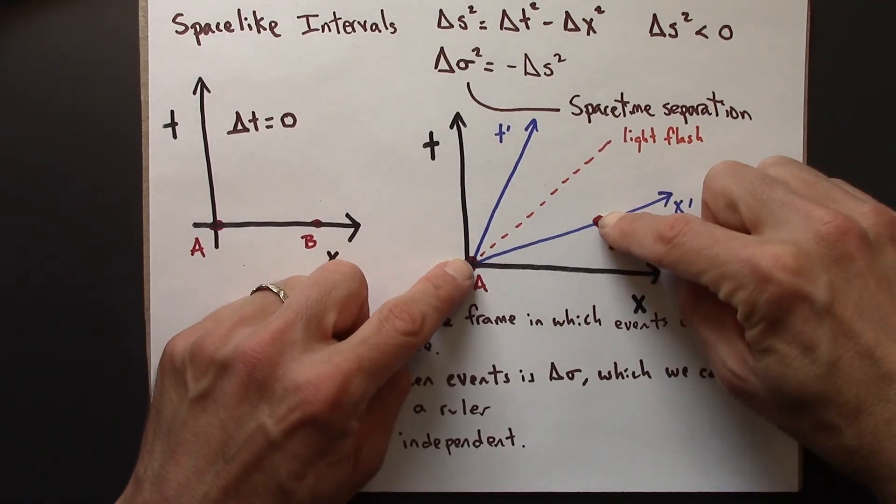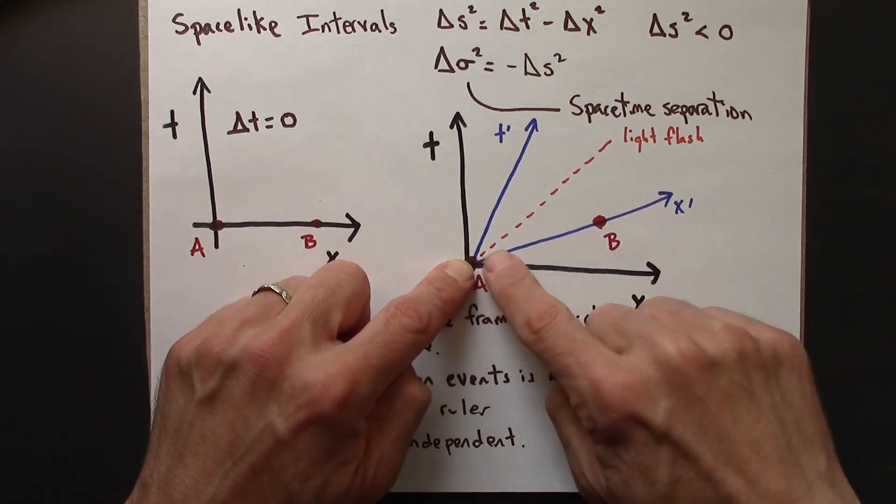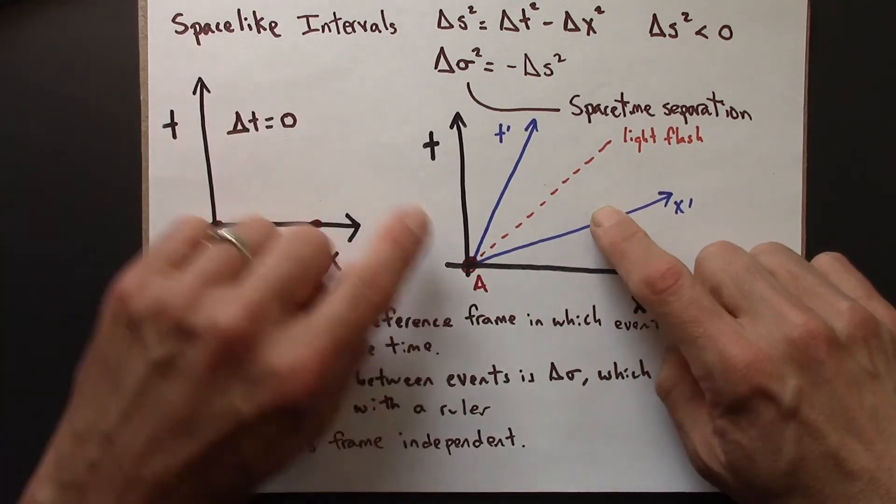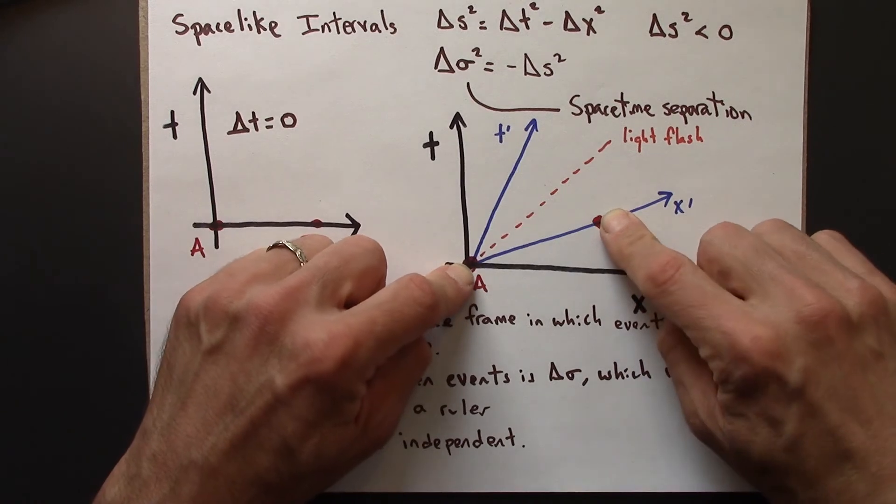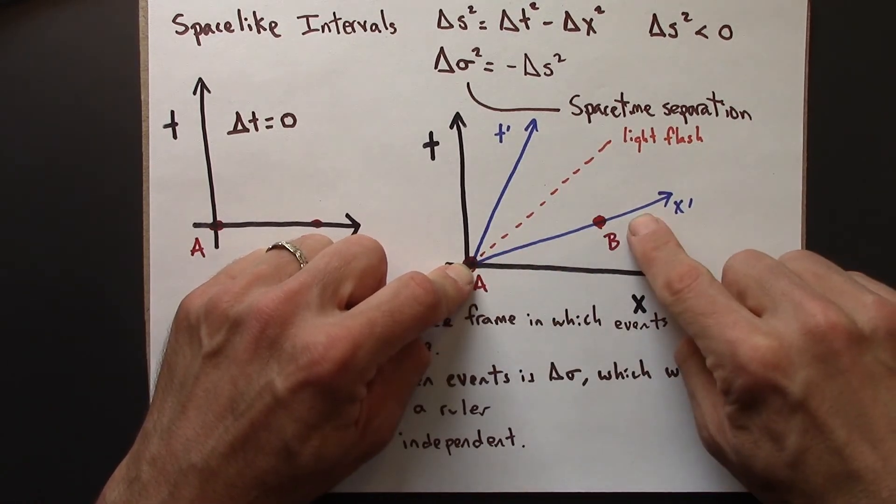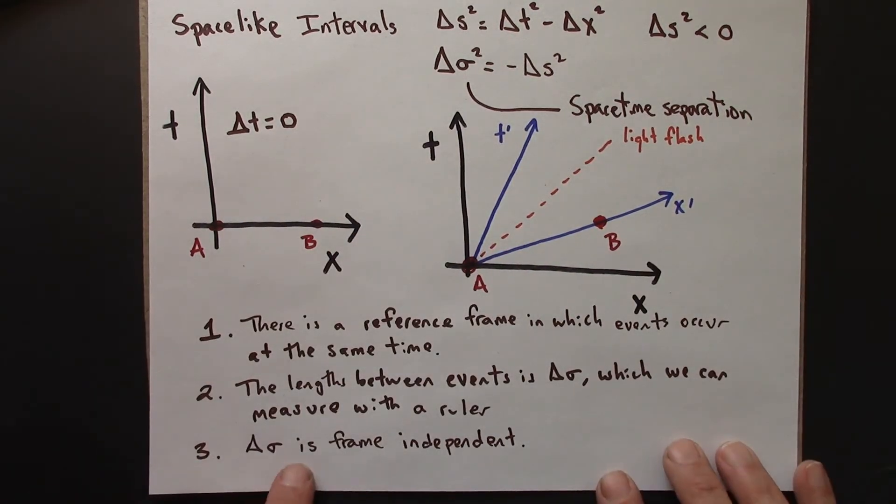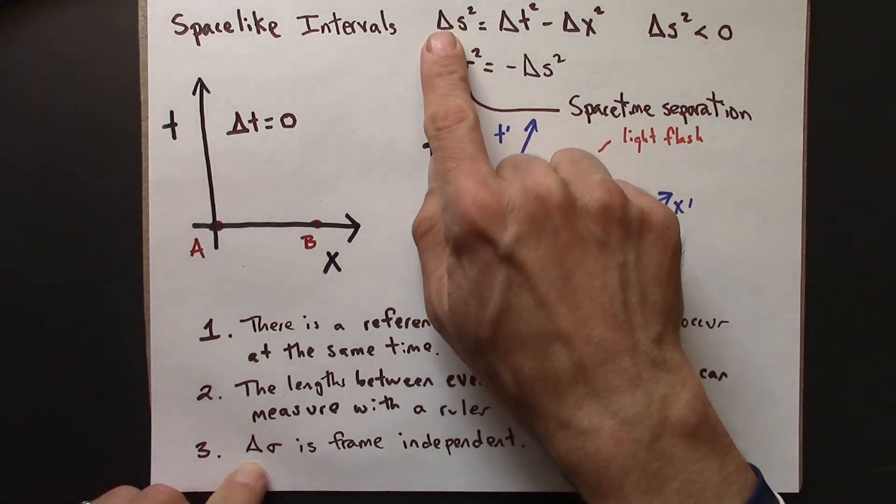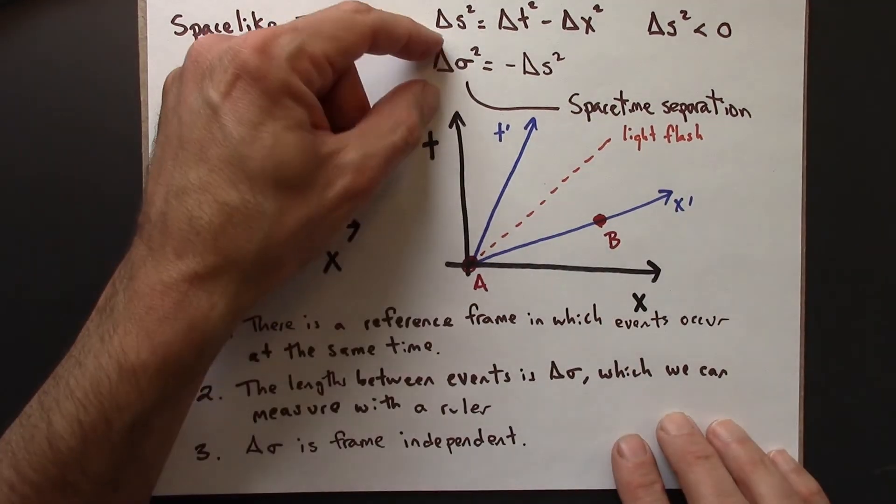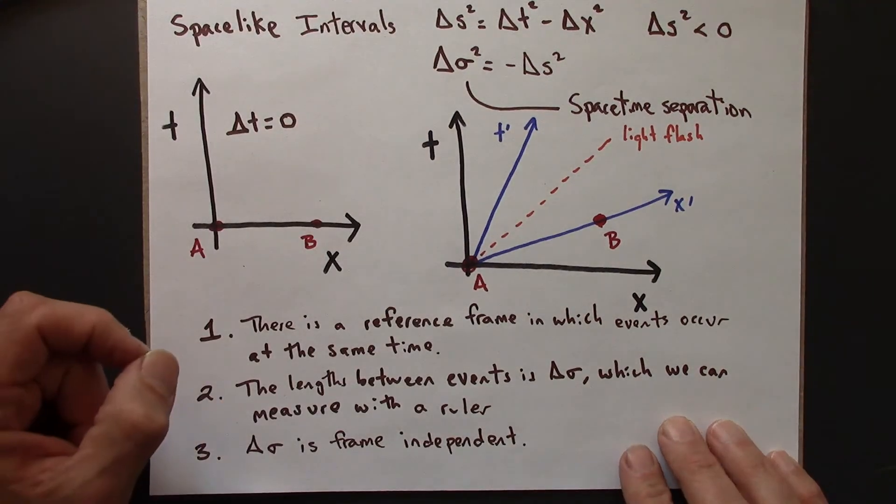There's no delta t prime here, just delta x prime, so it's purely spatial, hence spacelike. And we can measure it with a ruler. We wouldn't need a clock because we know that A and B are simultaneous. And then delta sigma, or delta sigma squared, delta s squared, this quantity is frame-independent.